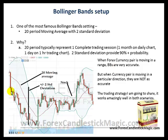But look here — if a trader, for example, opened a trade here and the currency pair hits the upper Bollinger Band, they could close the trade. But if you look further, the currency pair keeps moving in this particular direction, and any trader who would have closed the trade there would have missed out on about 150 to 175 pips. So when the currency pair is moving in a range, Bollinger Bands are very accurate, but when it is moving in a particular direction, they are not as accurate. The trading strategy I am going to share with you works amazingly well in both scenarios.